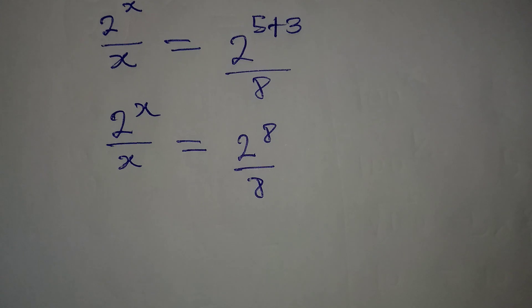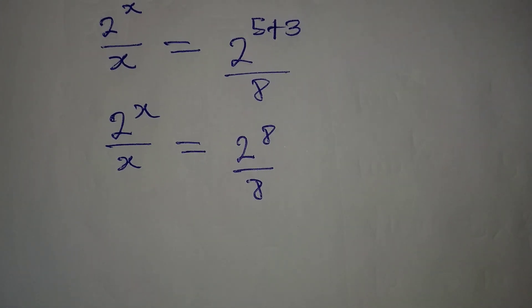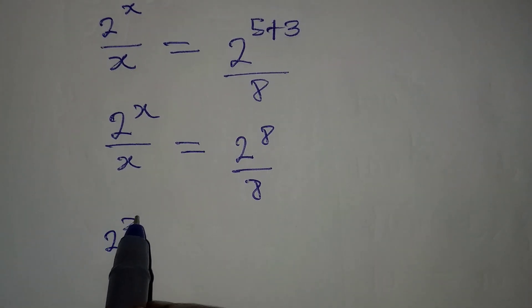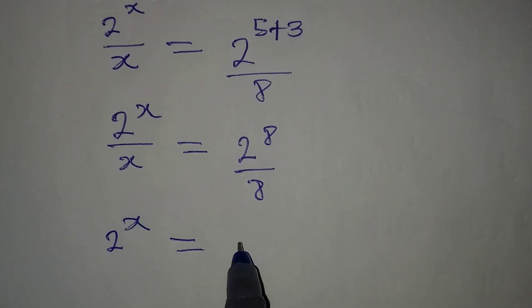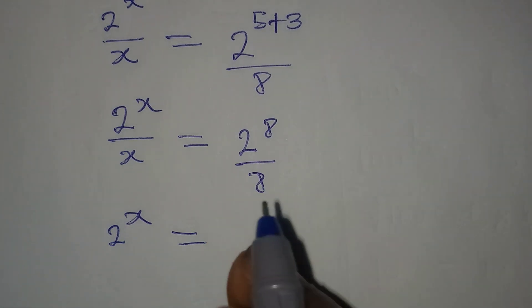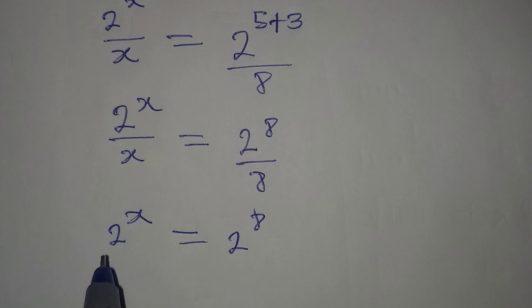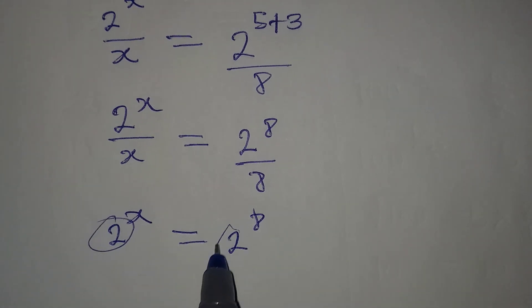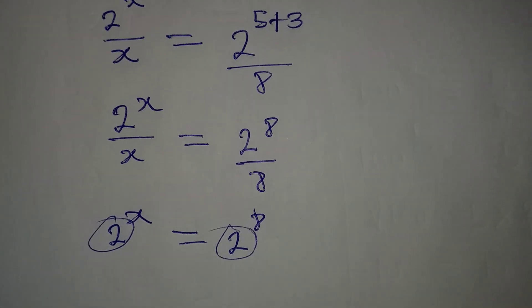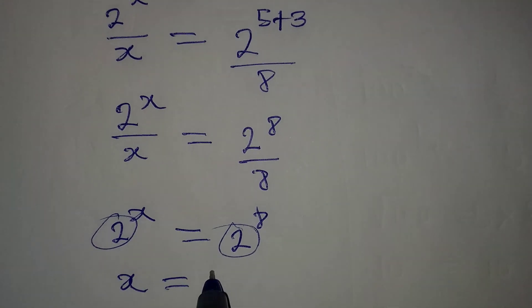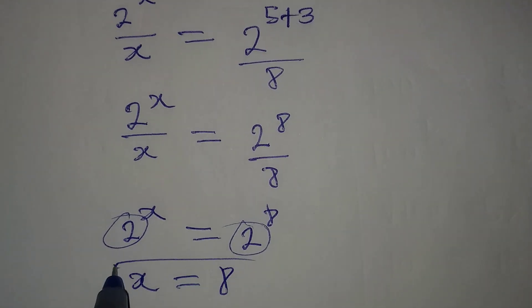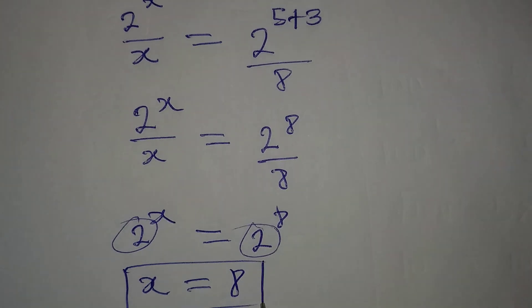So from here, you can decide to work with the powers. I mean, work with the numerator, which is 2 to the power of x, and it has to be equal to the numerator on the right, which is 2 to the power of 8. If the bases are the same, what happens to the powers? They should also be equal. So x is equal to 8 if I work with the power, or if I work with the numerator.